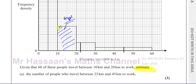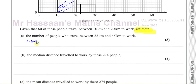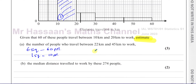We can think about this in terms of big squares. In the 10 to 20 bar, you have 6 big squares which represent 60 people. So 6 squares represent 60 people, which means 1 square represents 10 people. If we can work out how many of these big squares there are between 22 and 45, then we multiply that by 10 to get the number of people in that area.